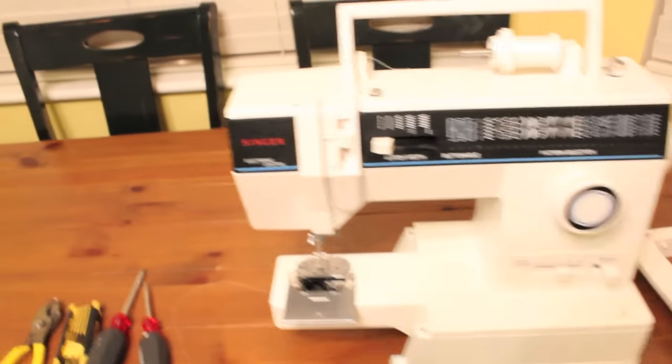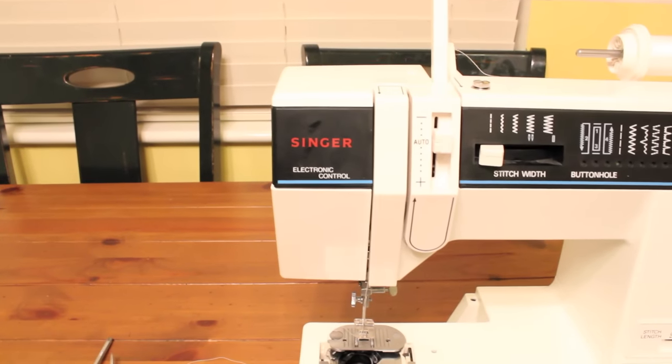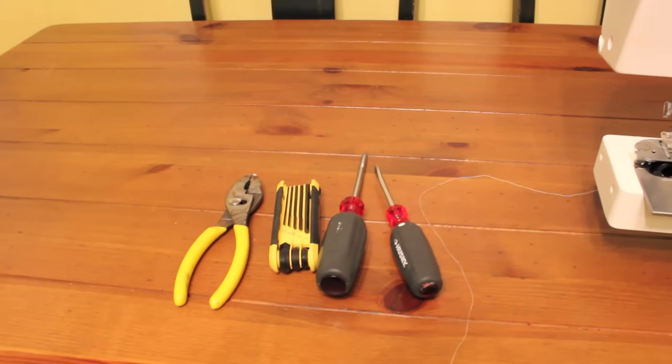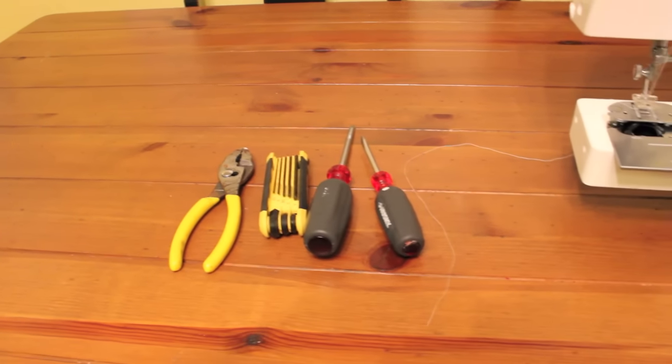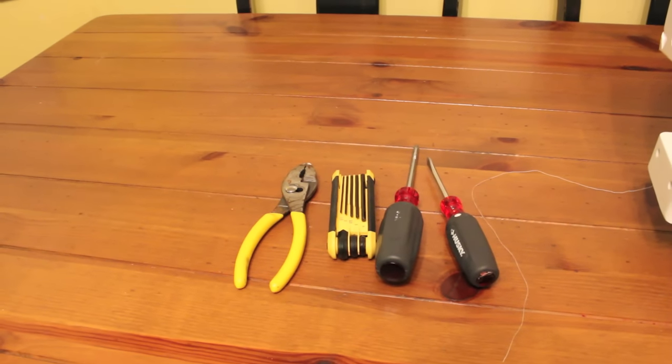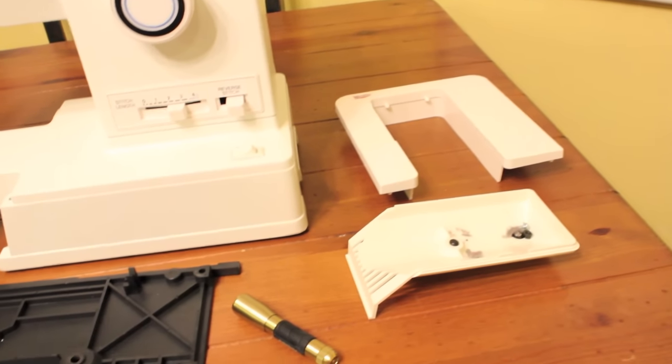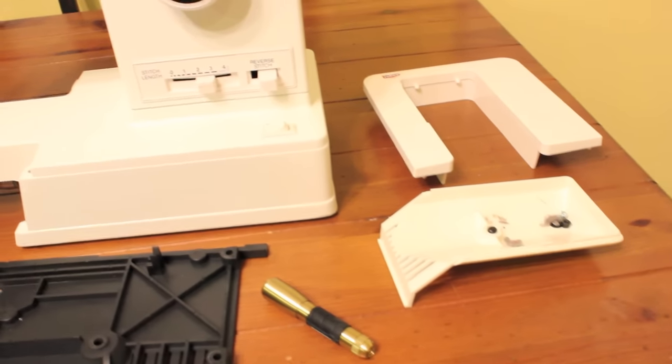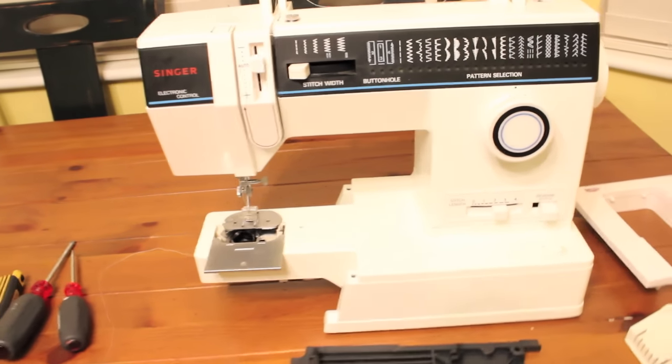I've got a Singer sewing machine here, an older one. I've taken some basic tools: a Phillips, a flathead, a pair of pliers, and some Allen wrenches. I've taken the bottom off of the sewing machine, which is pretty easy to do - just a couple of screws and loosening a nut.